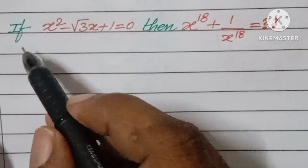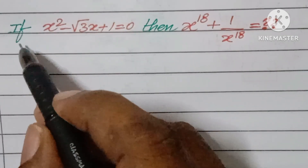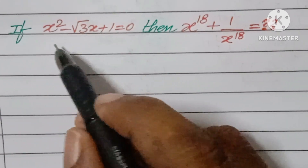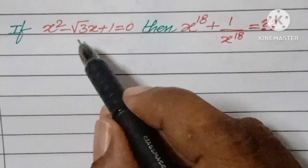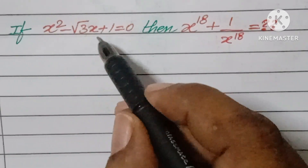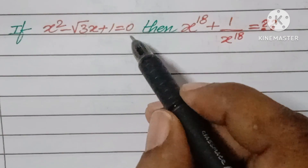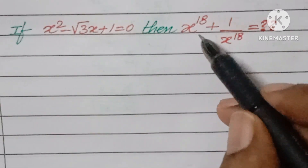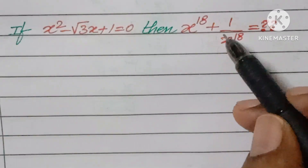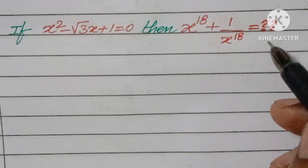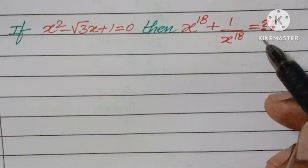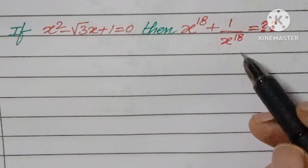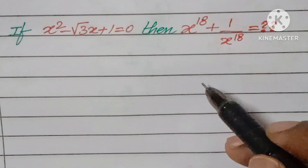Hello, welcome back to NCG Max. Today we are looking at a problem: given x² - √3·x + 1 = 0, find the value of x¹⁸ + 1/x¹⁸. As you are going to solve this problem, pause the video for 10 seconds and try it.